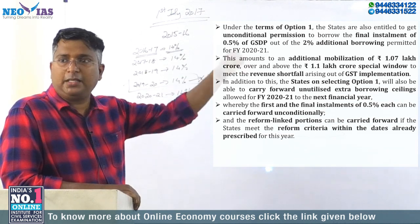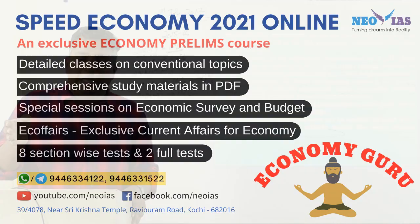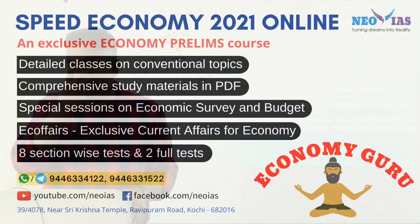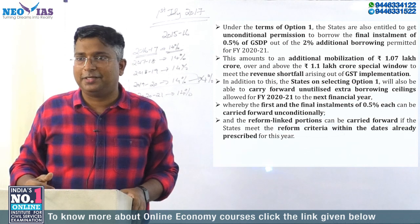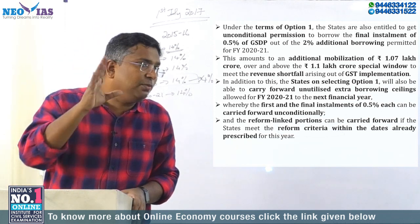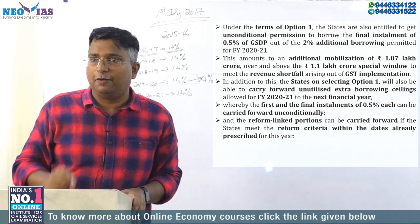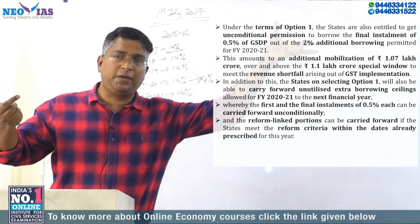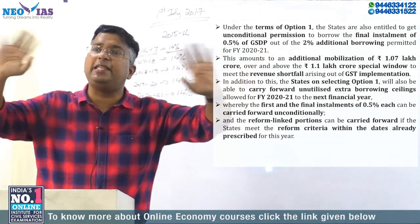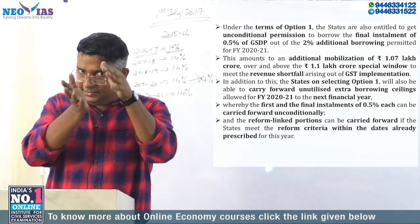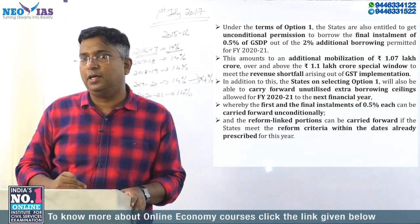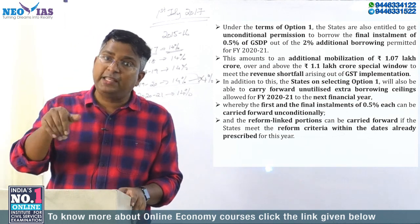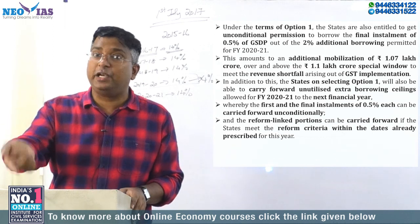That's why the first topic and the second topic are interrelated. You have to link the first measure and the second measure. The first measure: the center allowed 2% additional borrowing. In this 2% additional borrowing, if you join option one, 1% — that is the first 0.5% and the last 0.5% — is unconditional and can be carried forward. The middle 1%, equally divided into four portions of 0.25% each, can also be carried forward if you start implementing the reforms by the prescribed date.